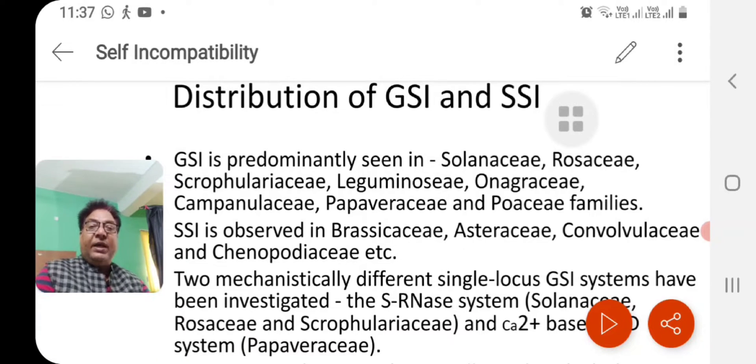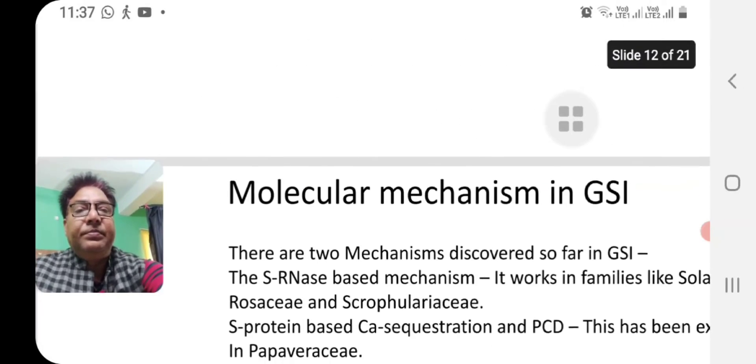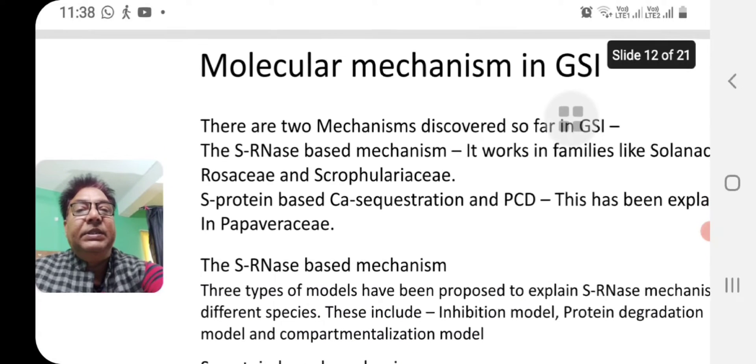If you talk about GSI mechanism, there are two systems that have been investigated. One is dependent on the activity of sRNAs that is produced by the pistillar tissue which inhibits pollen tube growth by degrading the rRNA of the pollen tube. The other has been found in Papaveraceae, that is calcium sequestration based programmed cell death of the pollen tube. So there are two molecular mechanisms as far as gametophytic self incompatibility is concerned.